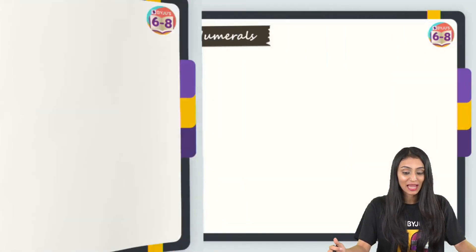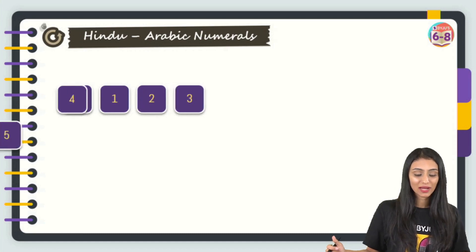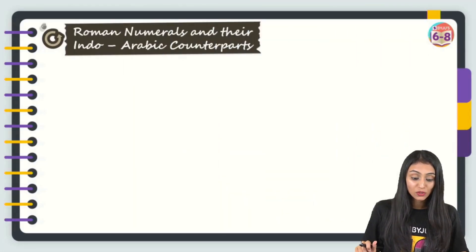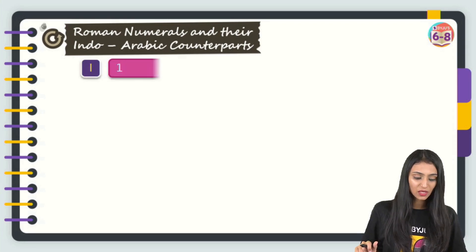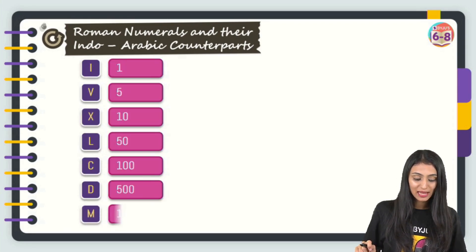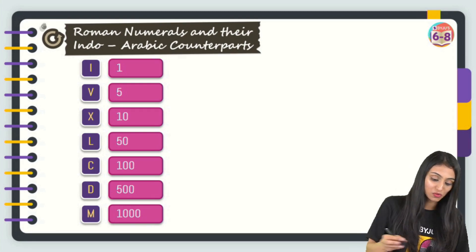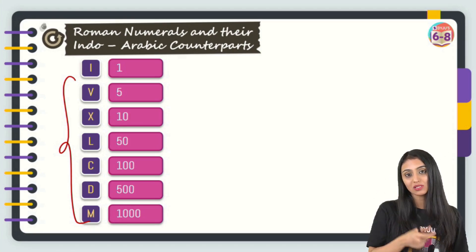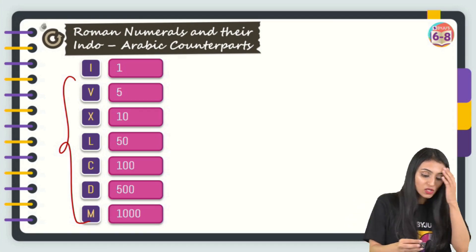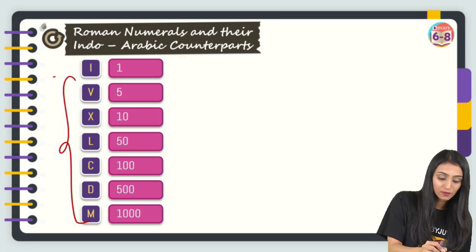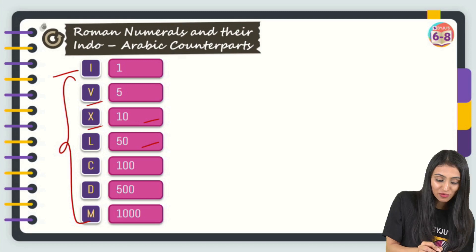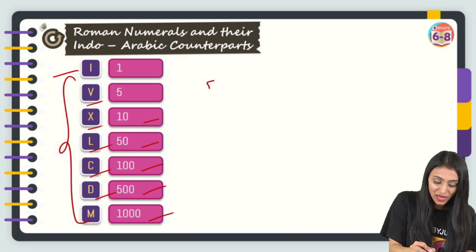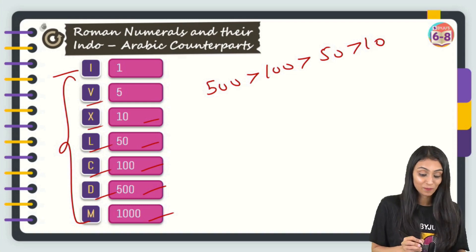Hindu-Arabic numerals go from 0 through 9. For Roman numerals and their Hindu-Arabic counterparts: I = 1, V = 5, X = 10, L = 50, C = 100, D = 500, M = 1000. Note that D > C > L > X in value — pretty simple to understand.